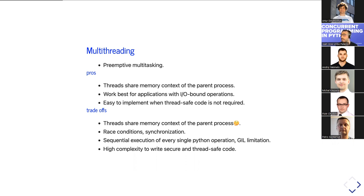Multi-threading works best for applications with I/O-bound operations. It's easy to implement threads when thread-safe code is not required — you can create a pool of threads based on independent tasks. However, thread-safe code requires locking for shared objects and variables. Without proper locking, you'll get non-deterministic behavior when manipulating shared content between threads.